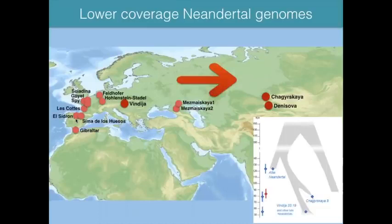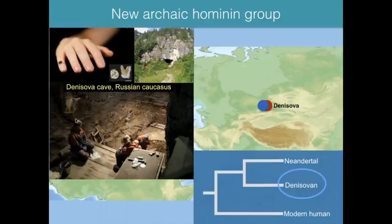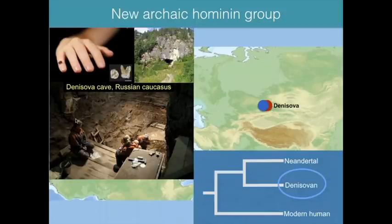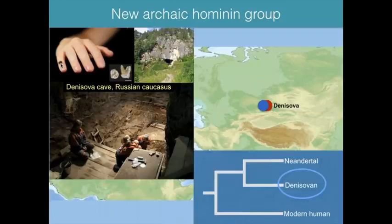Denisova Cave in the Altai region has been a very important site — with extensive stratigraphy, many mammalian remains including cave bears and hyenas, and ongoing excavations. In 2010, we received a very small finger bone from the cave. The genome obtained from it was neither modern human nor Neanderthal. We reconstructed a high-coverage nuclear genome showing it represented a previously unknown archaic group — sister to Neanderthals, sharing a common ancestor with them between 350,000 and 500,000 years ago, and together sharing a common ancestor with modern humans 600,000 to 700,000 years ago.